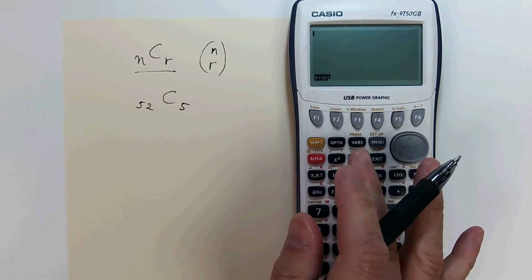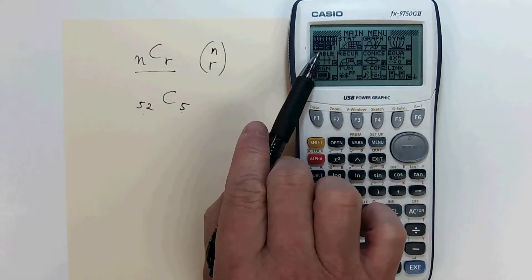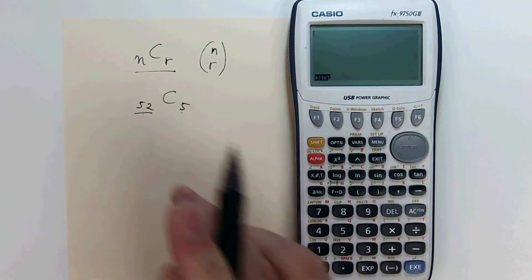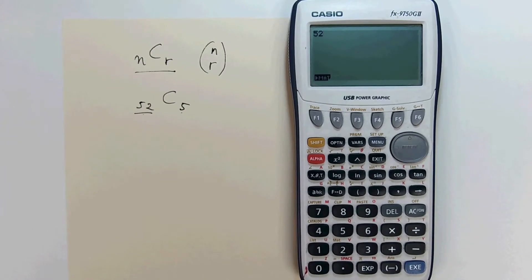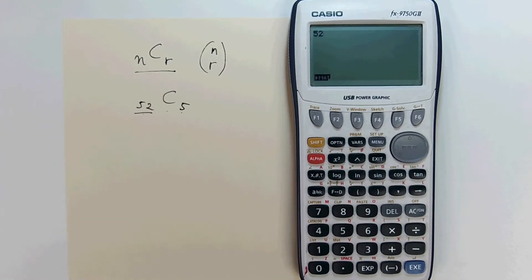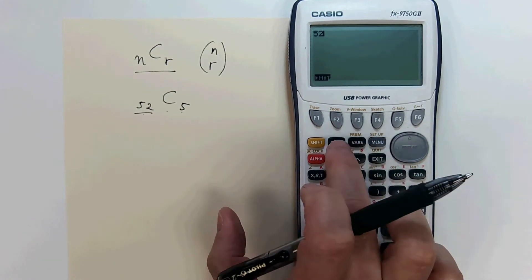First, make sure we're on the math menu. Press menu, menu number 1, execute. We type in the number 52 here. Now look for the c. It's under the probability option, so press the option key.